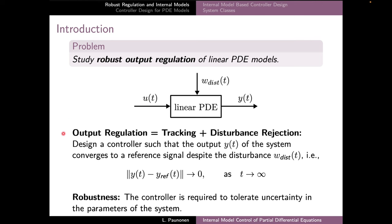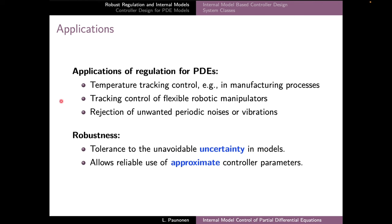In our main control problem, the output regulation problem, we are aiming to design a control signal in such a way that the measured output of the system converges to a predefined reference signal y_ref when t goes to infinity, and this happens despite the external disturbance signal w. In addition, we require that our control law is robust in the sense that the same controller will still work even if our linear PDE system experiences some changes, parameter perturbations, or modeling uncertainty.